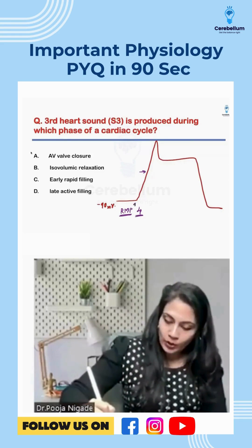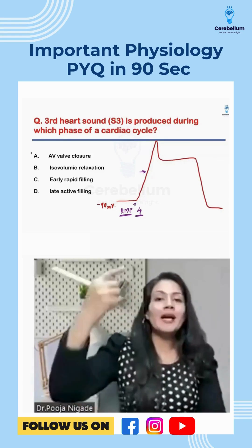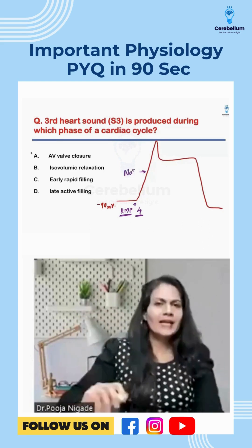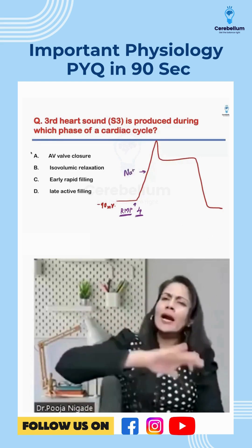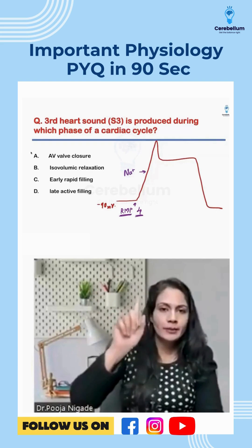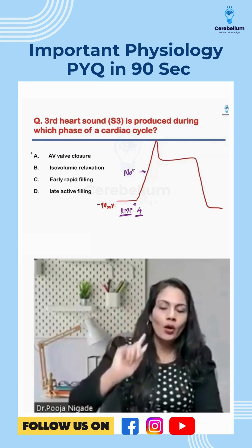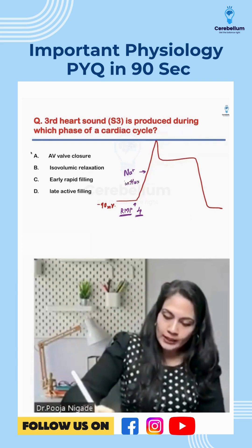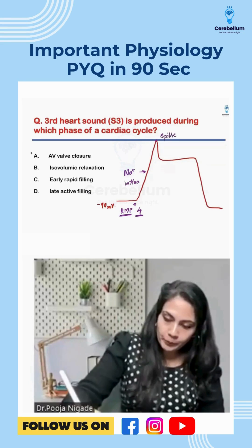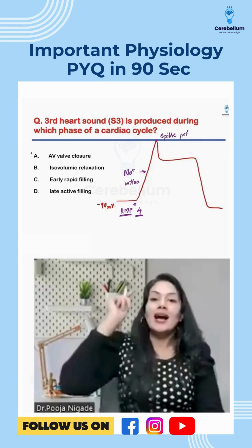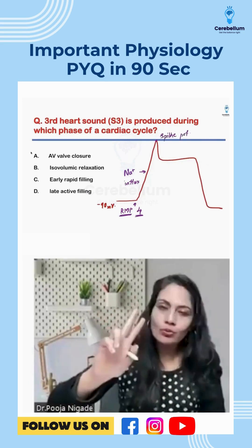As soon as the nodal tissue stimulates the cardiac muscle, the sodium channel is going to open. Cardiac muscle and this neuron are similar — you just have to add two phases in between. Sodium influx will continue until I reach a peak — that peak is called the spike potential.